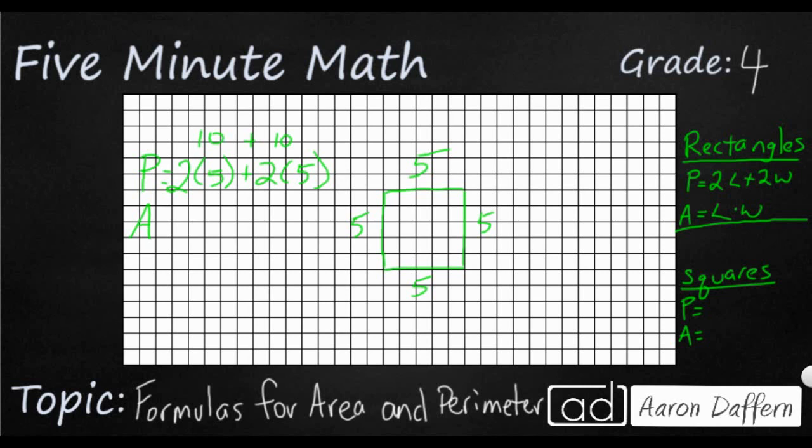You can use the rectangle perimeter, but you can also do a special one, and the equation is 4S. You could just take the side and multiply it times 4, because that's what we did.